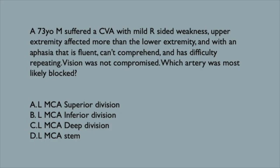Now that we know the aphasia, which branch is affected? Well, if it was at the stem, we'd expect much more of a global aphasia. And the deep branch would typically produce a pure motor hemiparesis. So that leaves us with either A or B — one of which causes a Broca's aphasia. Remember, Broca's is non-fluent; they can comprehend but they can't repeat. And the other one, of course, will produce the Wernicke's aphasia. But which is which?